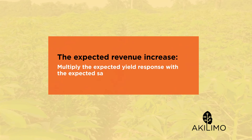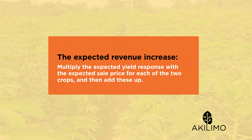To calculate the expected revenue increase, you just need to multiply the expected yield response with the expected sale price for each of the two crops and then add these up.